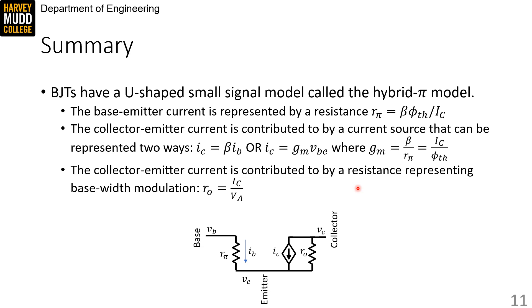The collector to emitter current is also contributed to by a resistance representing the base width modulation. That resistance is called RO, and it's equal to VA over IC.